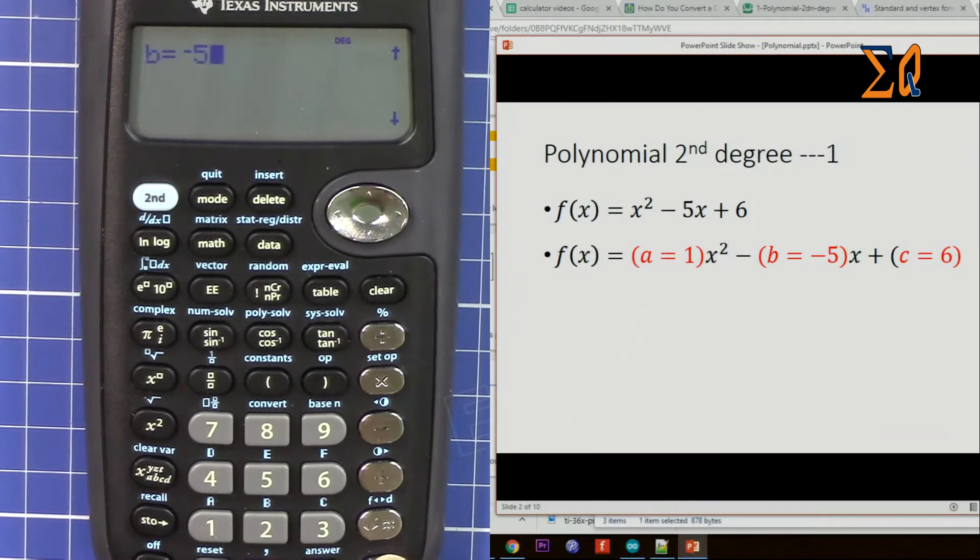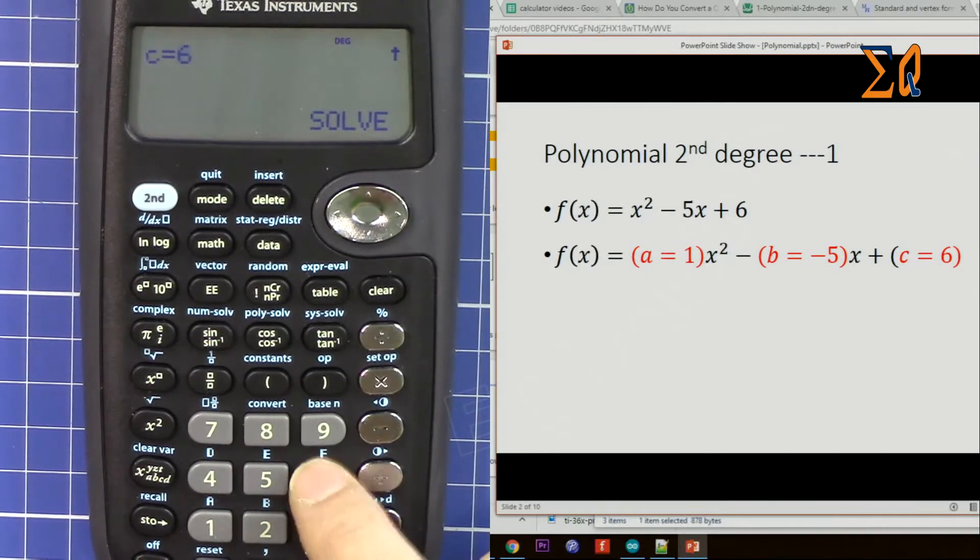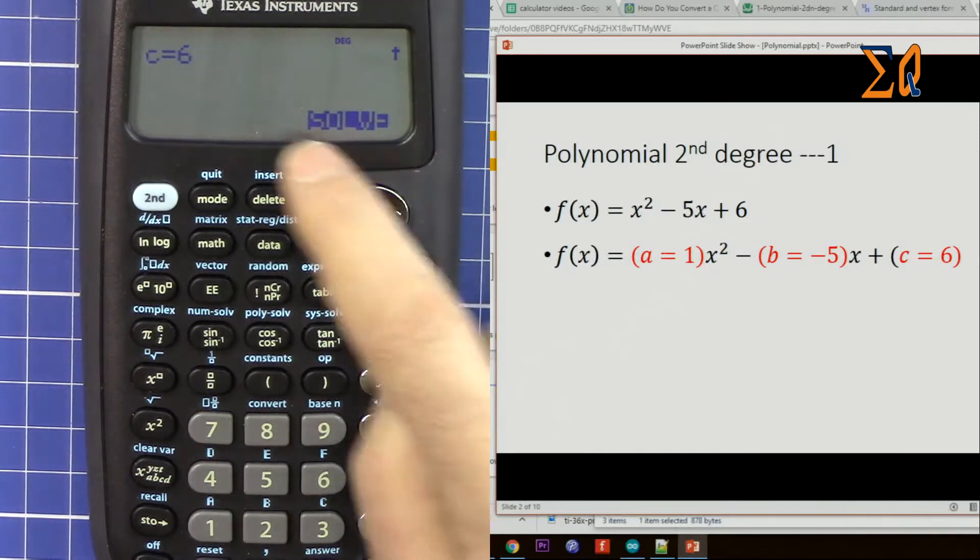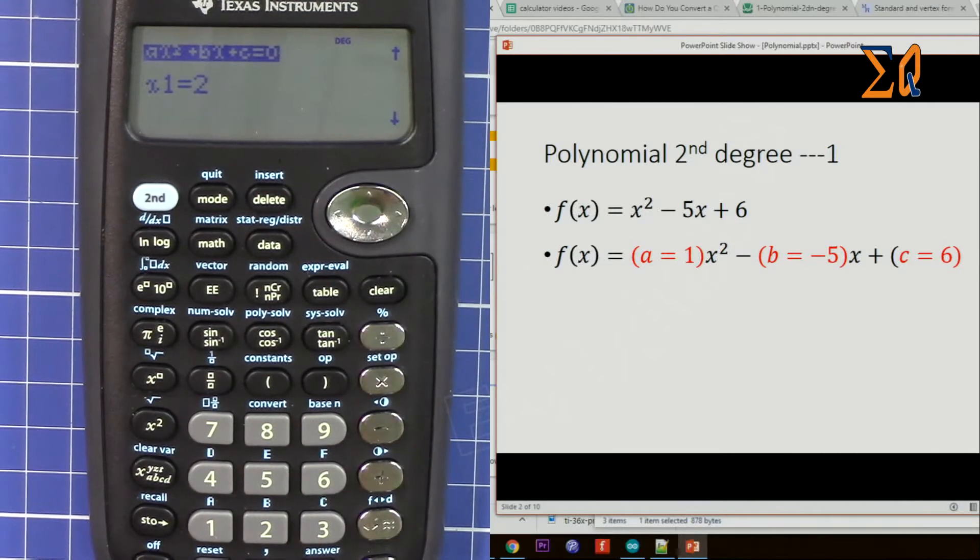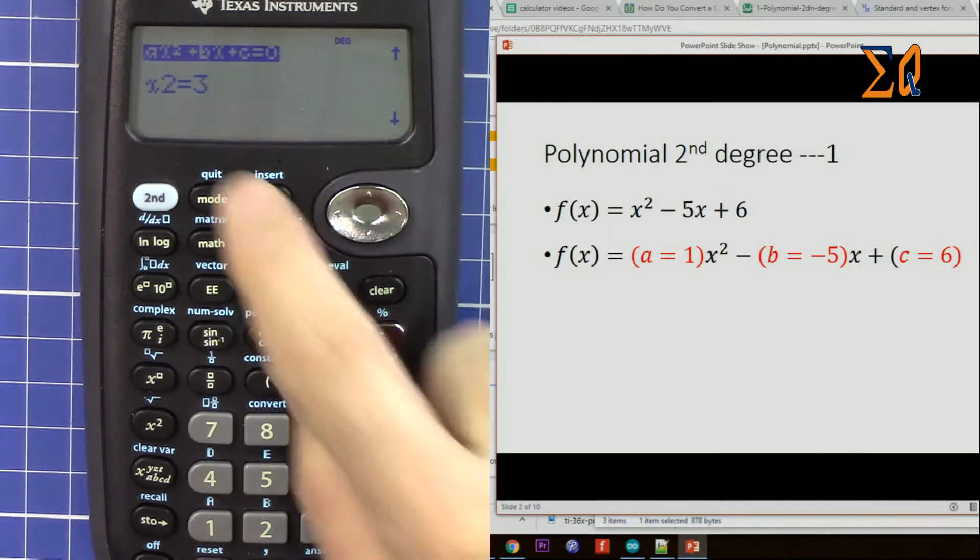Now the cursor moves here. For the last part, when you press it, you will see the value x1 is 2 and then x2 is 3.